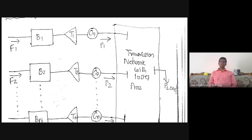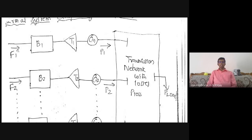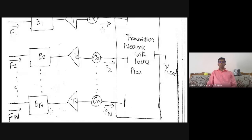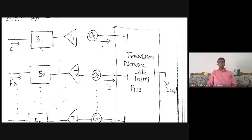Sometimes in problems we assume there are no transmission network losses and the system is 100% efficient. We might neglect certain losses for better understanding, but practically some network losses will always be present. Here the same story as in economic load dispatch of N thermal generating units without considering losses: consider N boilers B1, B2 up to BN. The fuel cost of the first boiler is F1, of the second is F2, and of the Nth boiler is FN.